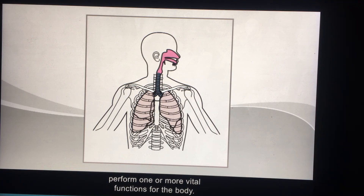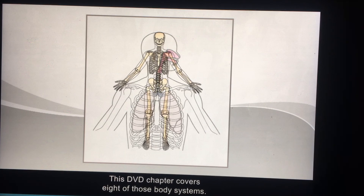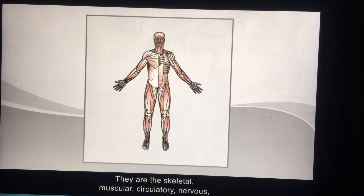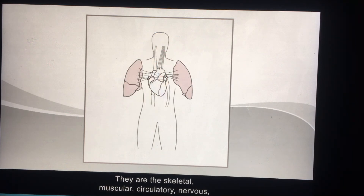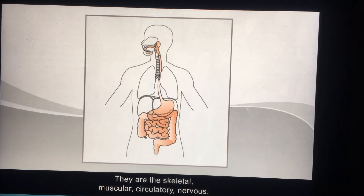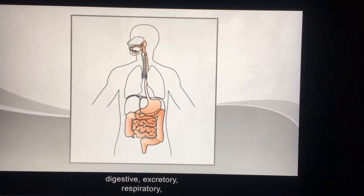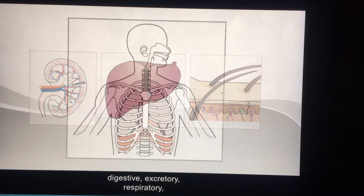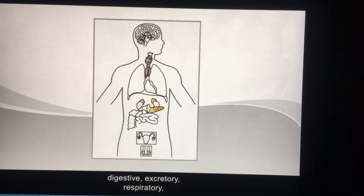This DVD chapter covers eight of those body systems: the skeletal, muscular, circulatory, nervous, digestive, excretory, respiratory, and endocrine systems.